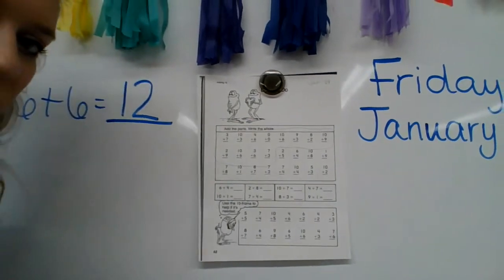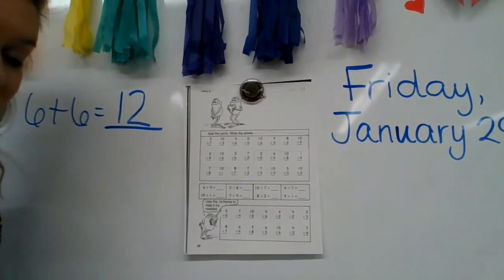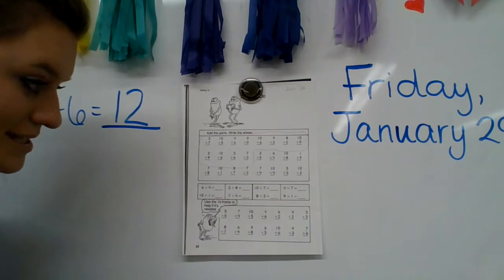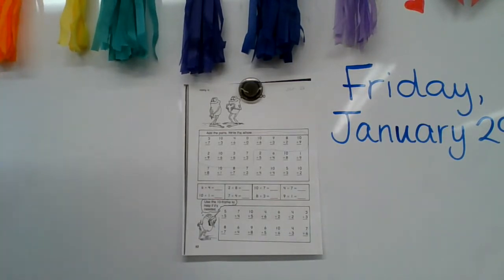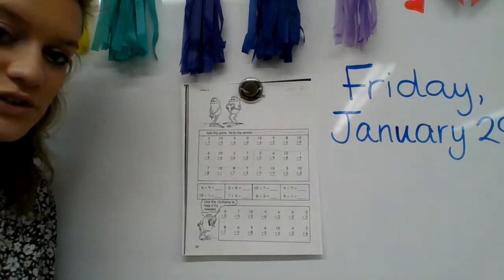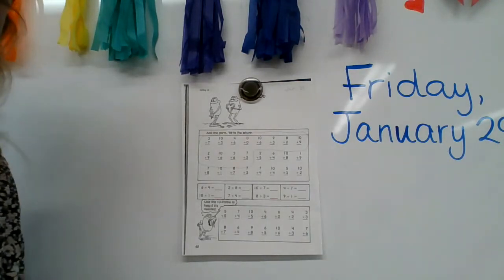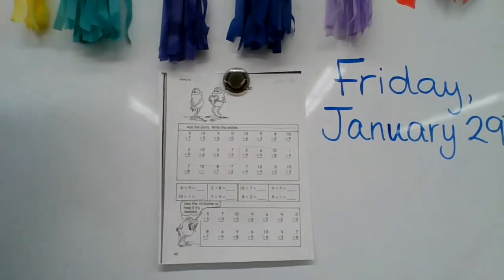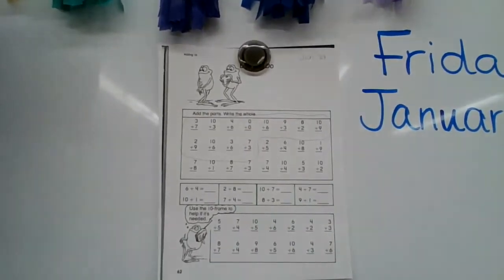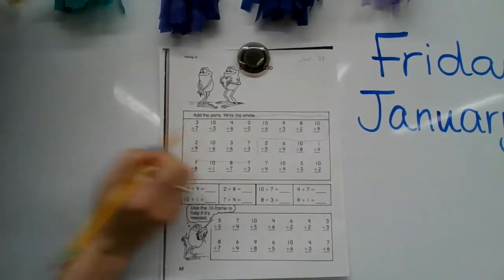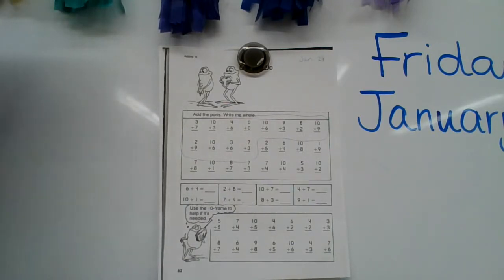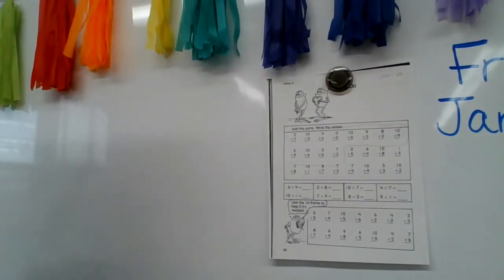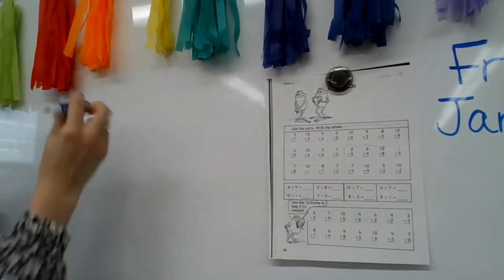Okay, so we have talked all about adding with 10, up to 10. We've talked about some 10 frames a little bit. Today we're going to do some together. Let's talk about our different ways we can solve these. So the first one says three plus seven. Now I'm going to show you what this would look like in a 10 frame.